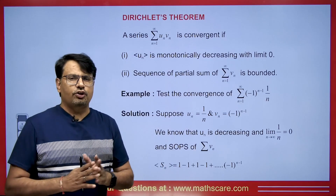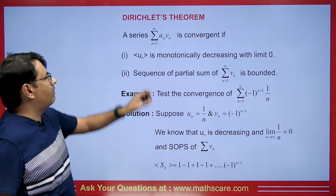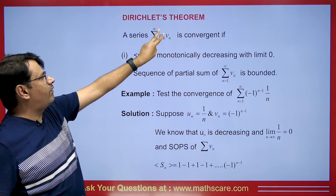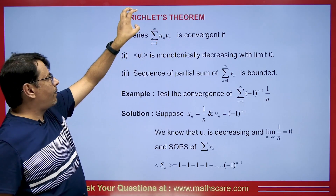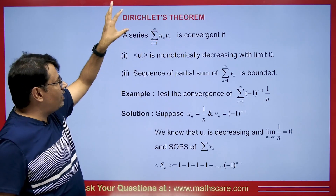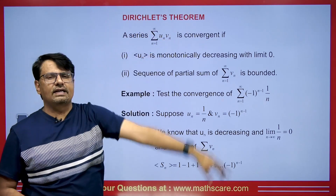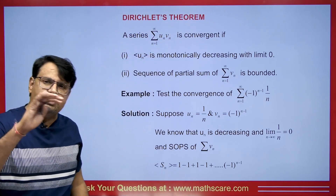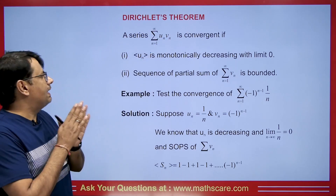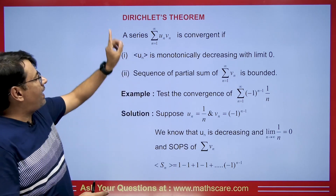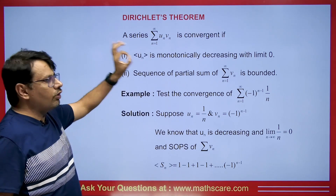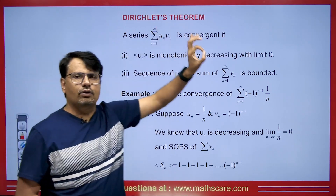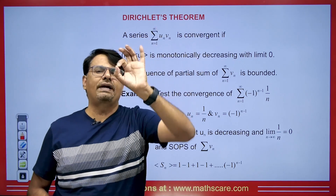We will discuss Dirichlet's theorem, which states that for two sequences un and vn, if any infinite series of their products is given, then it will be convergent if the first sequence satisfies these conditions: it should be monotonically decreasing and it should tend to 0.